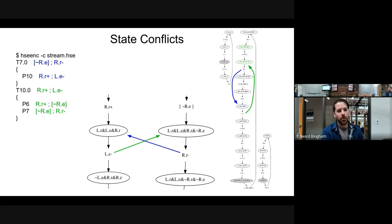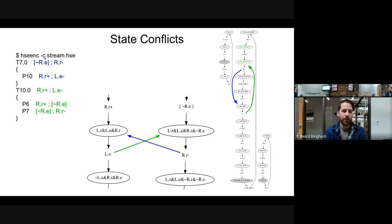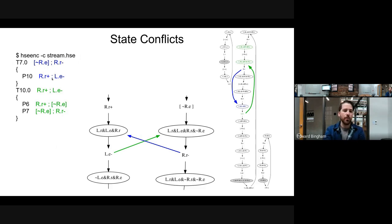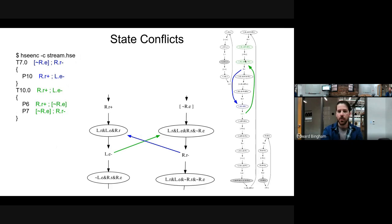There is a tool that's part of the Haystack called HSC encoder, or HSC enc. It can be used to identify state conflicts in a given HSE. If you run HSC encode -c on the HSE, you'll get a printout of the set of conflicting states and conflicting transitions. This is saying that R.R down will fire at the semicolon before L.E down, and L.E down will fire at the semicolon before R.R down and before the guard on R.E low — so these transitions fire unintentionally.